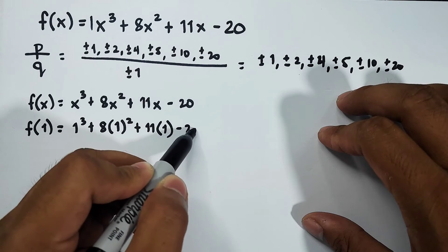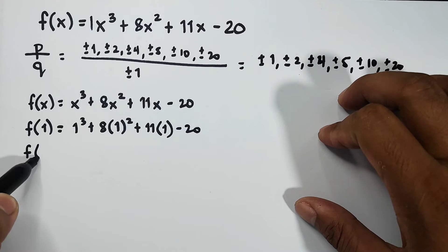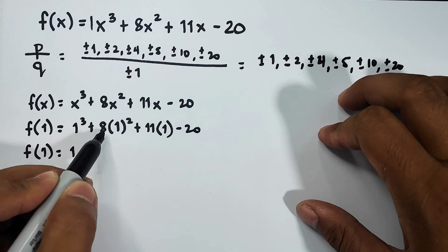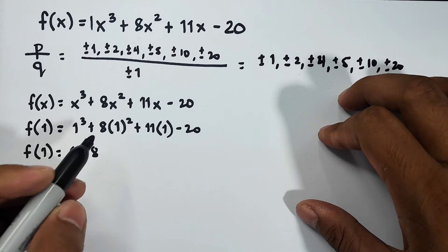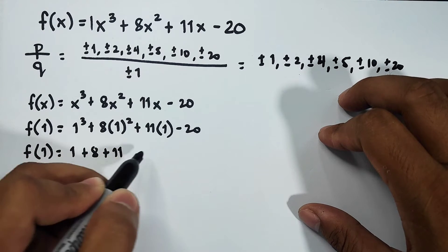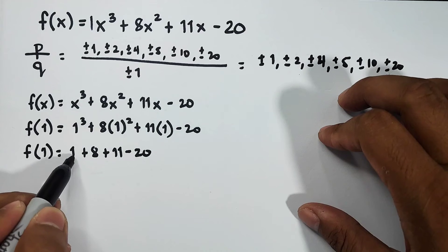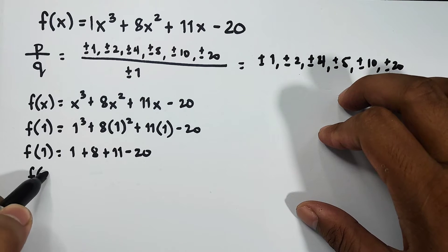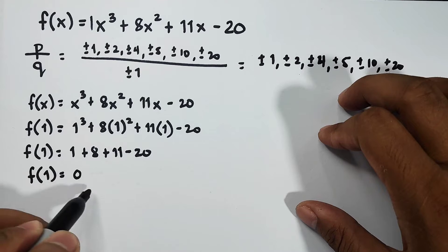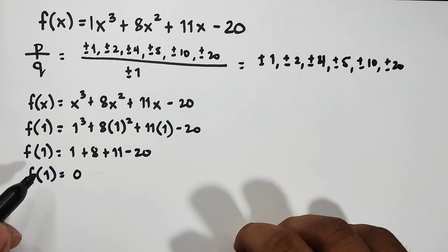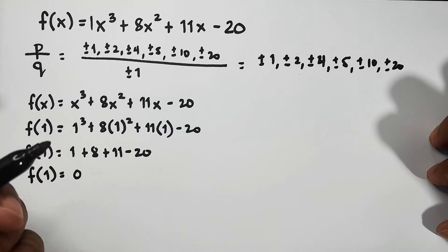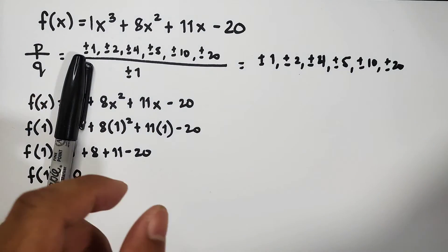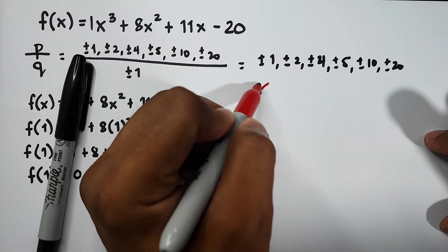And simplifying this, f(1) is: 1³ is 1, 1² is 1 times 8 that is 8, plus 11 times 1 that is 11, minus 20. This is 1 + 8 that is 9, plus 11 that is 20, minus 20, meaning f(1) = 0. Since this is 0, we are sure that one of the values or one of the zeros is equal to 1. We have x = 1.